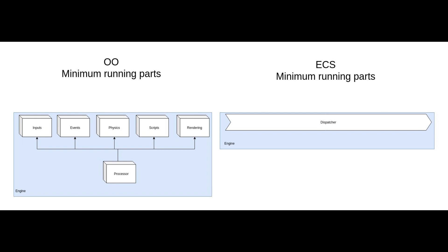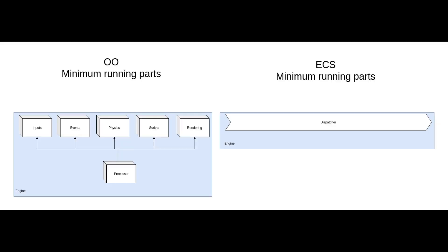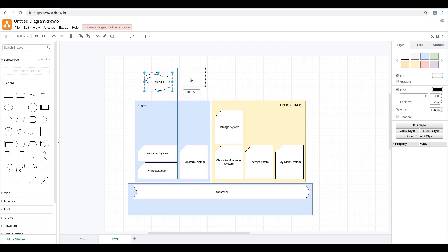In an object-oriented game engine, the minimal requirements to run are a tree of algorithms that check inputs, run physics, run transformation systems, the rendering system, and so on. In ECS, on the other hand, nothing is forced — the minimal thing that runs is just the system dispatcher, so if the dispatcher is empty, the running loop is completely empty. In object-oriented, multi-threading must be assigned manually by the programmer.